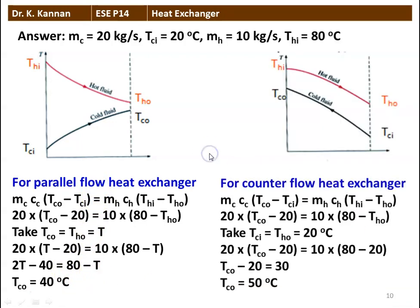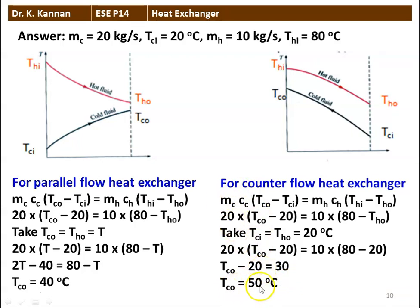For counter flow arrangement, the same formula applies — heat gained by cold fluid equals heat lost by hot fluid: 20 × (TCO − 20) = 10 × (80 − THO). In counter flow, the limiting condition is TCI = THO = 20°C. Substituting: TCO − 20 = 20, so TCO = 50°C. In the case of counter flow heat exchanger, TCO = 50°C, and in the case of parallel flow heat exchanger, TCO = 40°C.